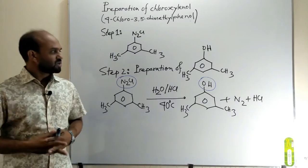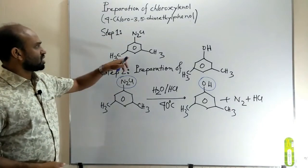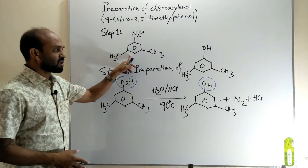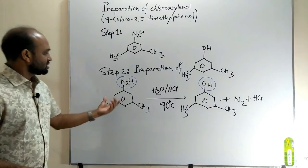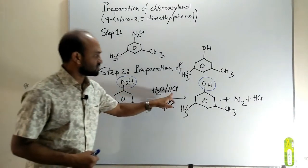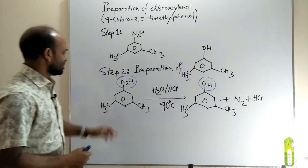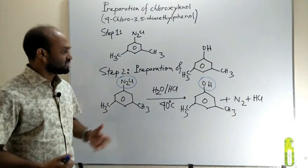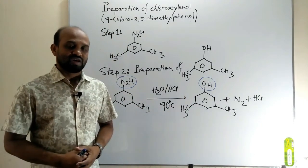Step 2: preparation of 3,5-dimethylphenol. From step 1, we got 3,5-dimethylbenzene diazonium chloride. From this compound, we have to prepare 3,5-dimethylphenol. The 3,5-dimethylbenzene diazonium chloride is hydrolyzed in the presence of acid at a temperature of 40 degrees Celsius. Then the diazonium group is converted to an OH group and we get 3,5-dimethylphenol.